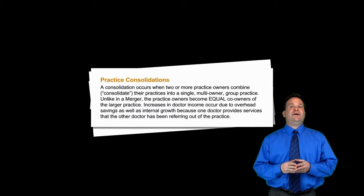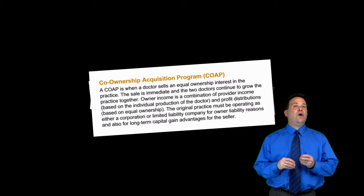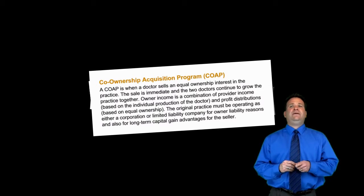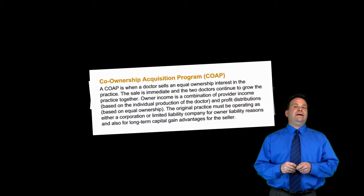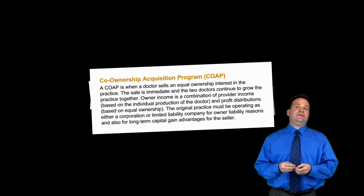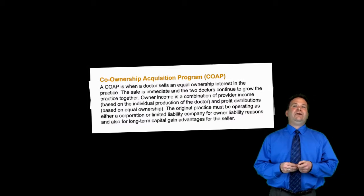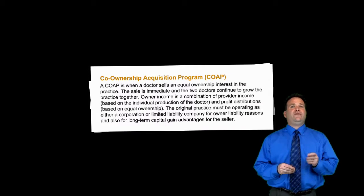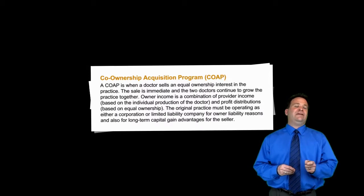Another type of transition is the co-ownership program, or co-op. A co-op is when a doctor sells an equal ownership interest in the practice. The sale is immediate and the two doctors continue to grow the practice together. Owner income is a combination of provider income based on individual production of the doctor and profit distributions based on equal ownership. The original practice must be operating as either a corporation or limited liability company for owner liability reasons and also for long-term capital gain advantages for the seller.